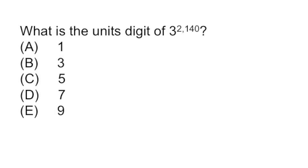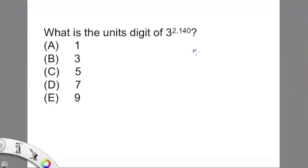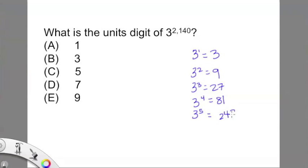Let's try another problem and see if you can solve it. What is the units digit of 3 to the 2140th? You have got to be kidding me. It's okay — we're going to try the shortcut and see if that works. Step one tells me I should write out the first 6 to 8 terms of this sequence, so that's what I'm doing here — 8 terms in total.